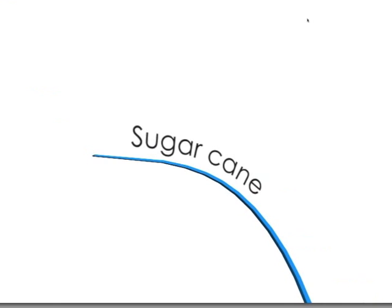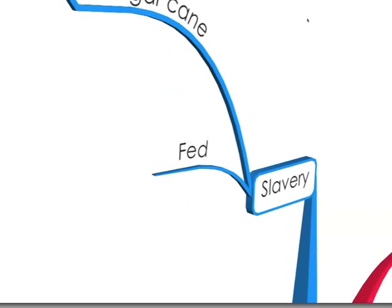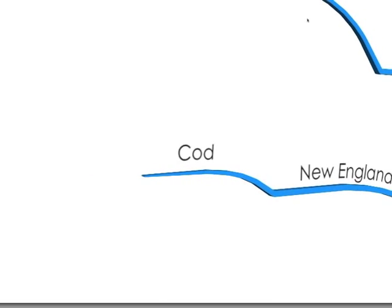Slavery is a part of mercantilism. It's used to grow sugarcane in the West Indies as a cash crop. These slaves are fed by New England and their cod fisheries.